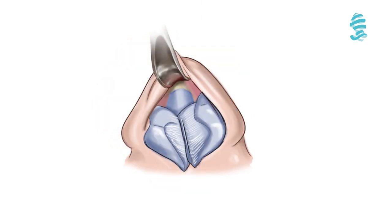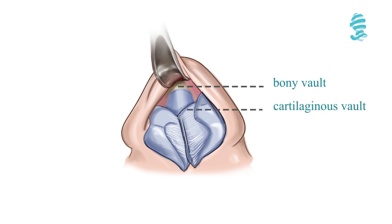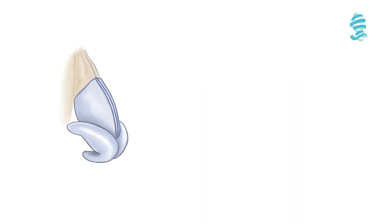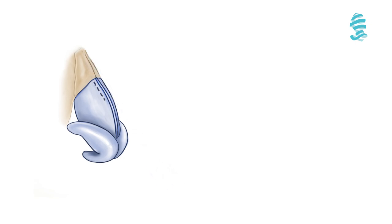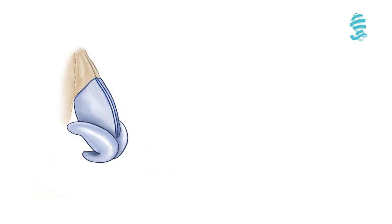The soft tissues over the cartilaginous and bony septum are separated. The bony hump can be removed by rasping, and the cartilage hump can be resected as one piece by a scalpel.